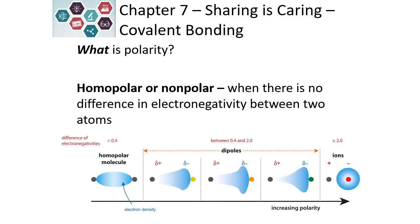The difference in electronegativity helps us determine how large our dipoles are. We range from nonpolar or homopolar — where there is no difference in electronegativity, such as when the same atom is bonded to itself like diatomics — all the way to larger dipoles. The diatomic elements are hydrogen, nitrogen, oxygen, fluorine, chlorine, bromine, and iodine, which exist in nature attached to each other.